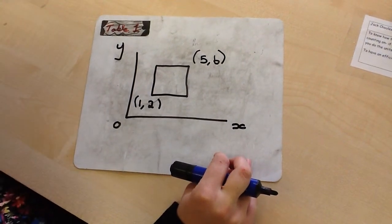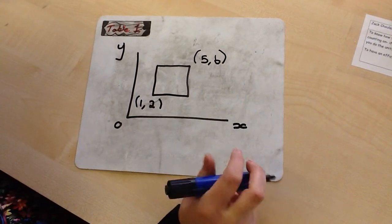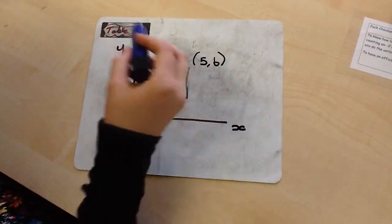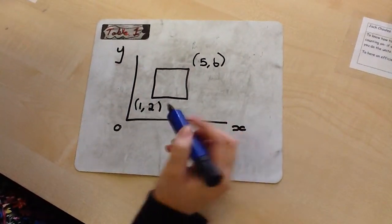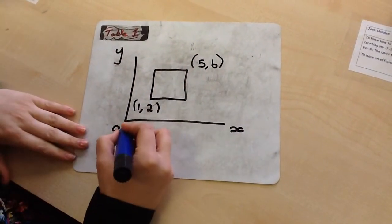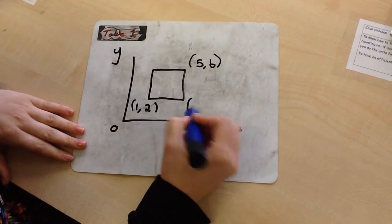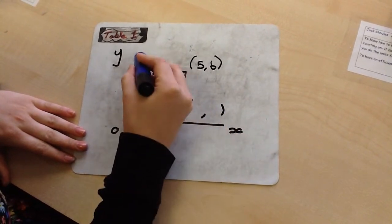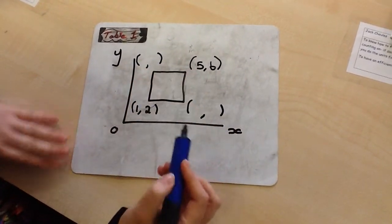Today we're going to be looking at how to find the missing coordinates when we've only got the grid and no numbers. Because we can't just say I'm going to fill in this grid — it doesn't work like that. So we need to use the information we have.